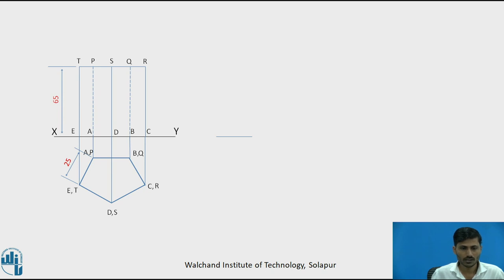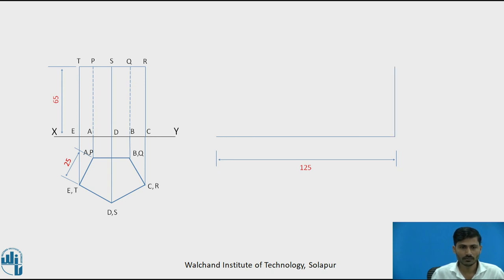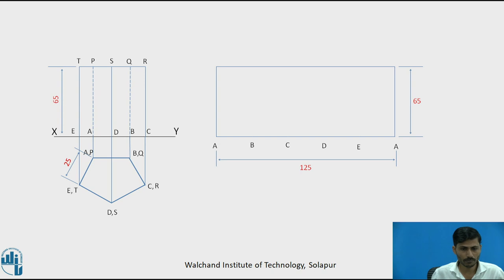For the full prism, the development is a rectangular surface with a stretch-out line equal to 5 times the edge of the pentagonal surface, that is 25 × 5 = 125 mm. Draw a 125 mm line, then a 65 mm height line indicating the height of the prism, and again a 125 mm line for the top surface, connecting the corners. This becomes the development of the full prism. Divide the 125 mm stretch-out line into 5 equal parts, naming them A, B, C, D, E on the bottom and P, Q, R, S, T on the top, and connect them with vertical edges.